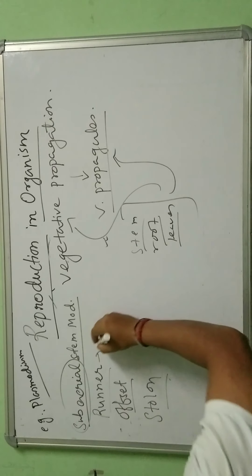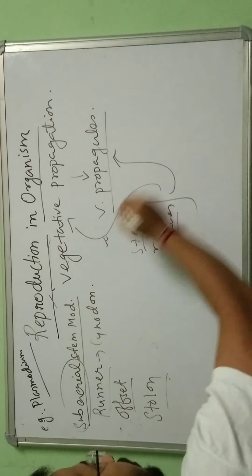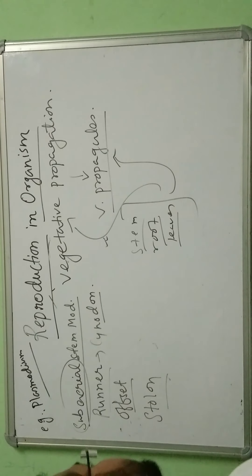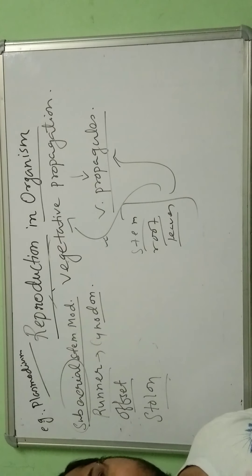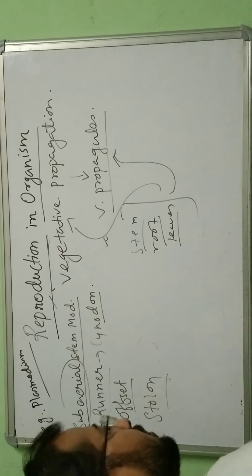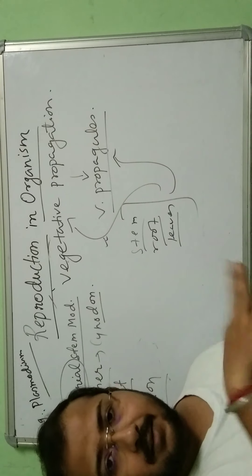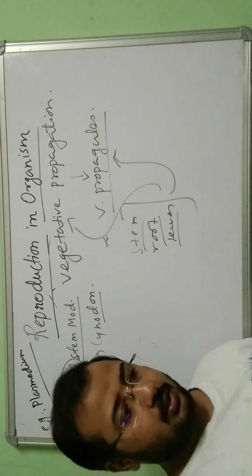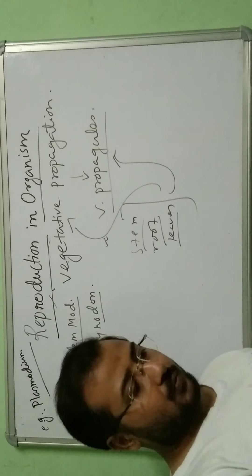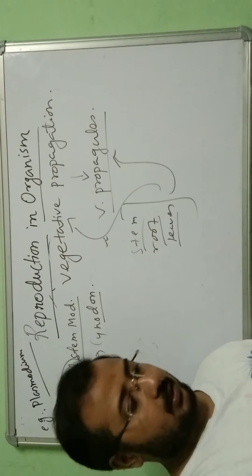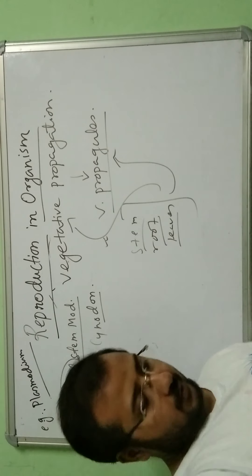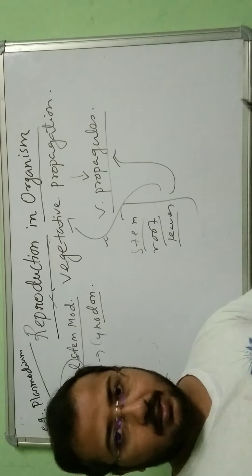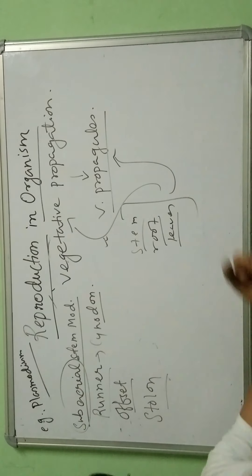Runner is one type of sub-aerial stem modification. One example is Cynodon, whose common name is lawn grass. If you try to pull up lawn grass, you will see that you cannot take out a single grass blade alone — they are all connected to each other and many grasses come together. This means there is a horizontal stem from which the grasses are growing, and that horizontal stem is the runner.